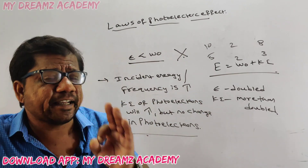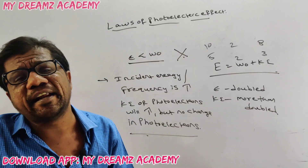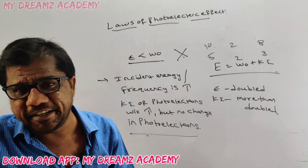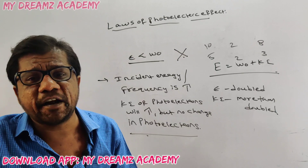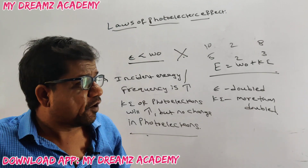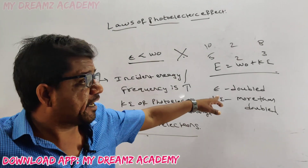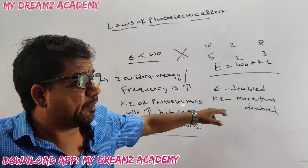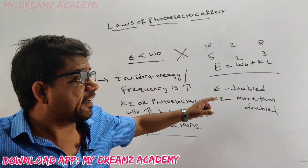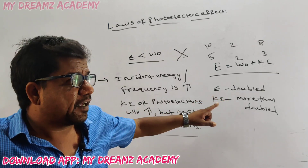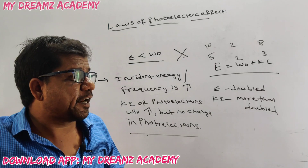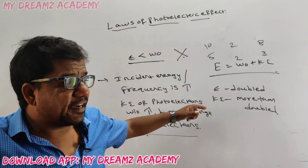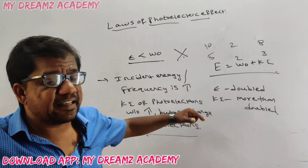To summarize the key questioning area: if incident energy is doubled, kinetic energy will be more than doubled. If incident energy is tripled, kinetic energy will be more than tripled. If incident energy is halved, kinetic energy will be less than half. Meanwhile, increasing incident energy does not change the number of photoelectrons.